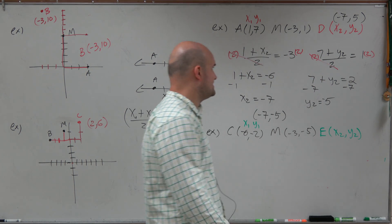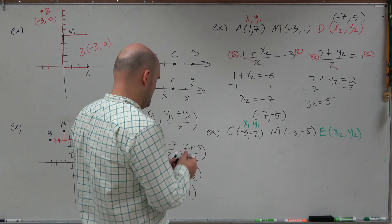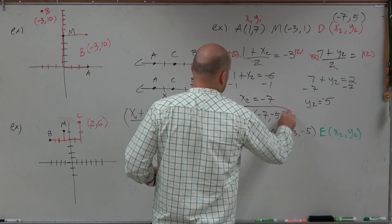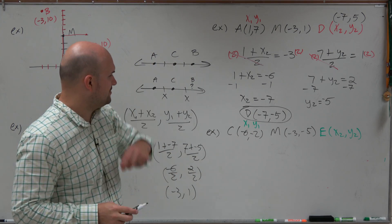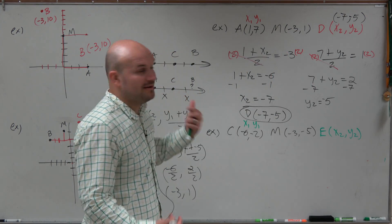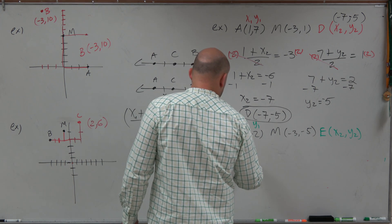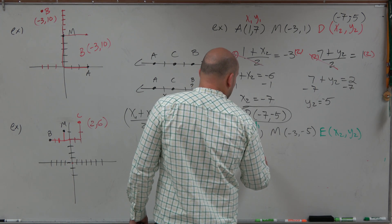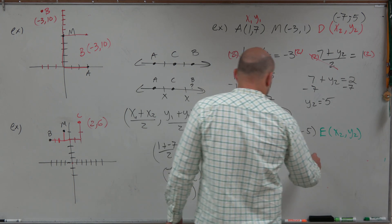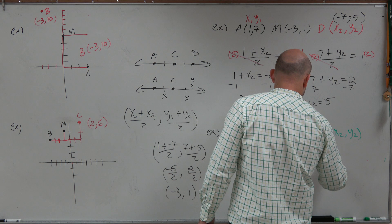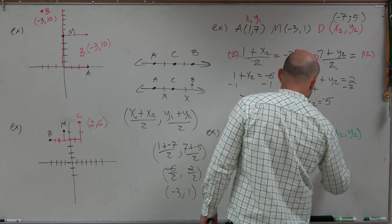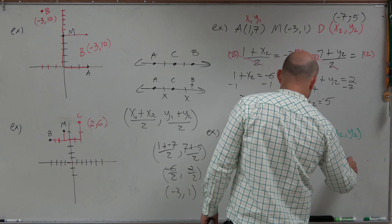So our other endpoint that we're going to find is going to be x2 and y2. Now I'm going to do the same thing. I'm going to know that x1 plus x2, which we do not know, divided by 2 equals negative 3. And negative 2 plus y2, divided by 2 equals negative 5.